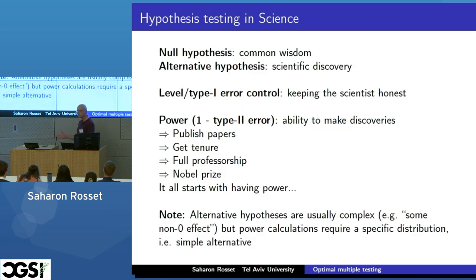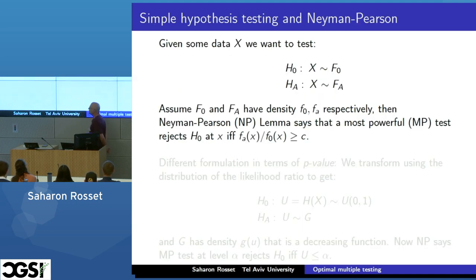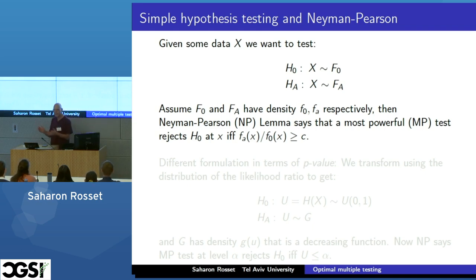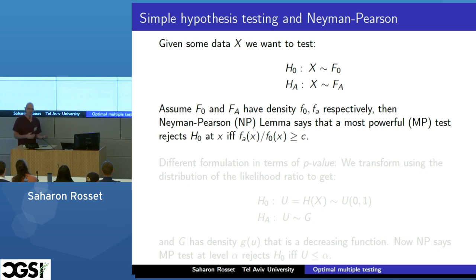I'm not introducing from first principles, hoping that everyone has done at least some statistics classes and knows the mathematical definitions of notions like power and level of a test. So let's bravely write this in mathematical notation. We'll define our null hypothesis: X is some abstract notion of the data we have — it can be anything. The null is that the data has some distribution, and the simple alternative is that the data has a different distribution. These distributions have densities, which we denote by small f, and the cumulative distribution function by big F.